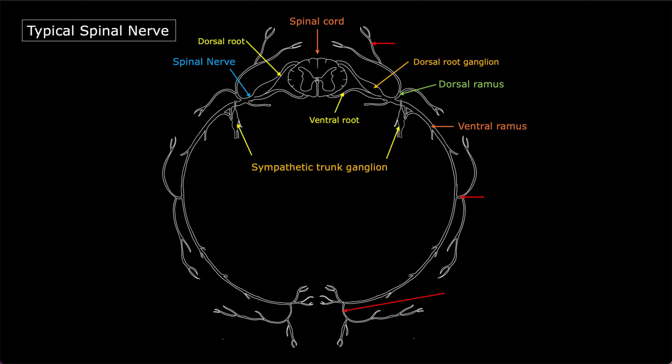There are numerous branches emerging from the spinal nerve throughout its course — posteriorly, anteriorly, and laterally. These branches are named according to their location: the one located posteriorly is the posterior cutaneous branch, the one located laterally is the lateral cutaneous branch, and the one placed anteriorly is the anterior cutaneous branch.